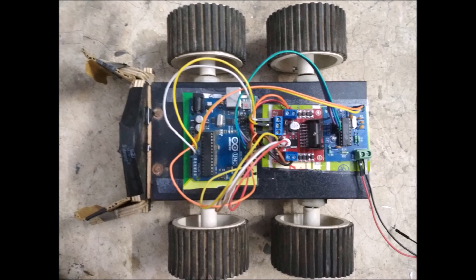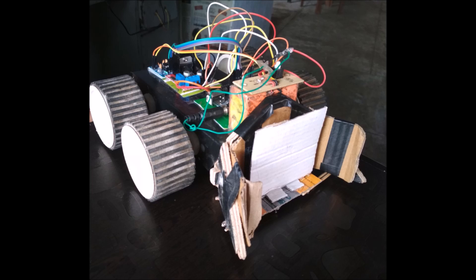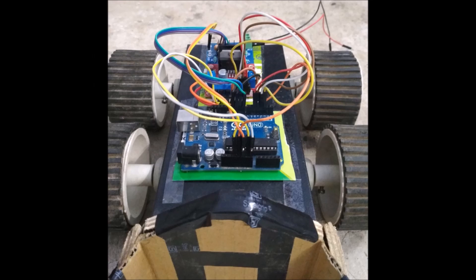These are the connections I have made. You can see all the three components are connected properly, and the jack is also connected. The power jack is connected with a battery to Arduino. This is the front view.